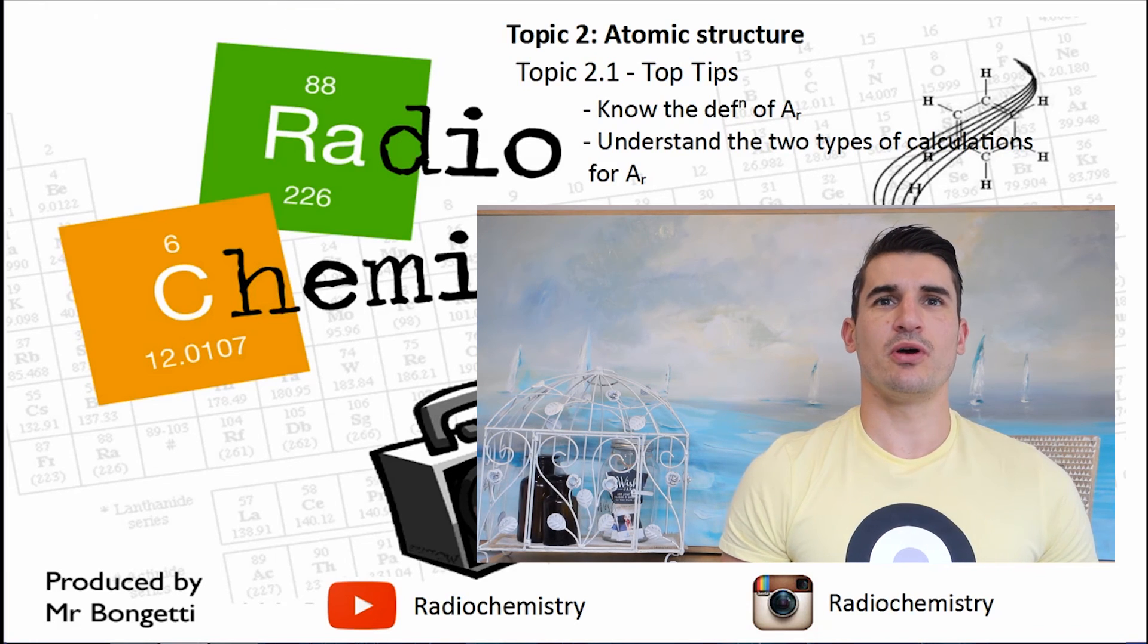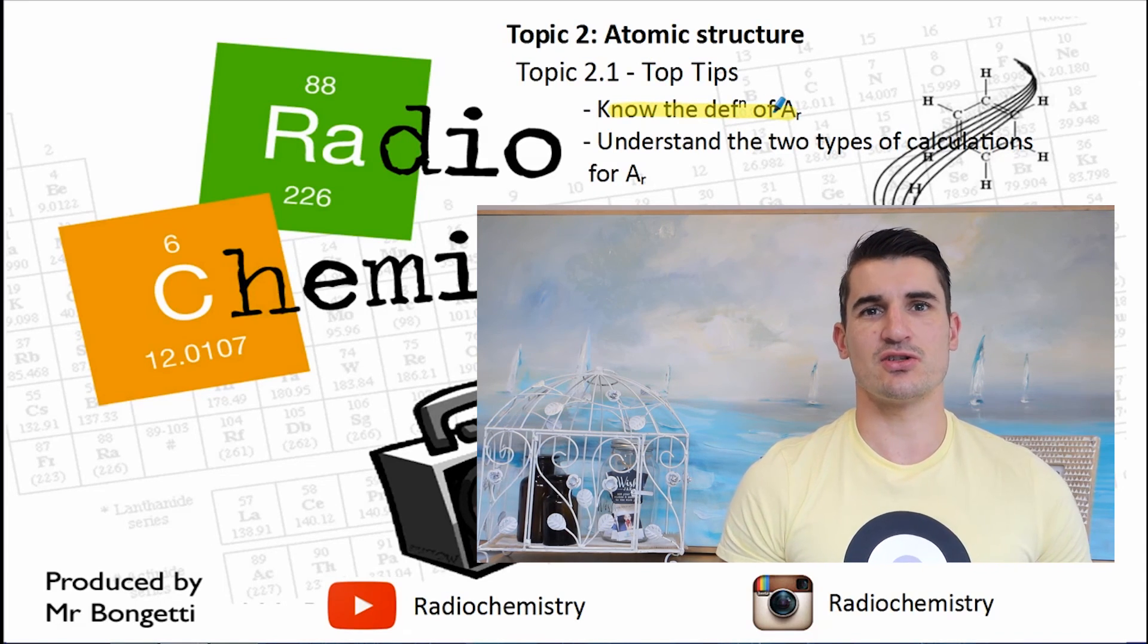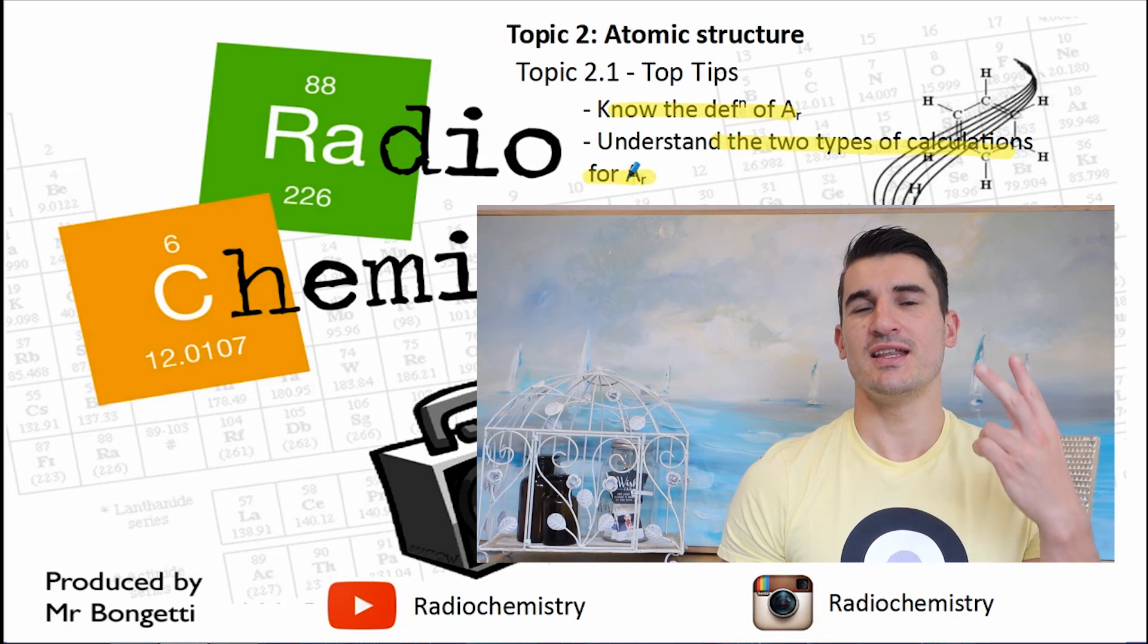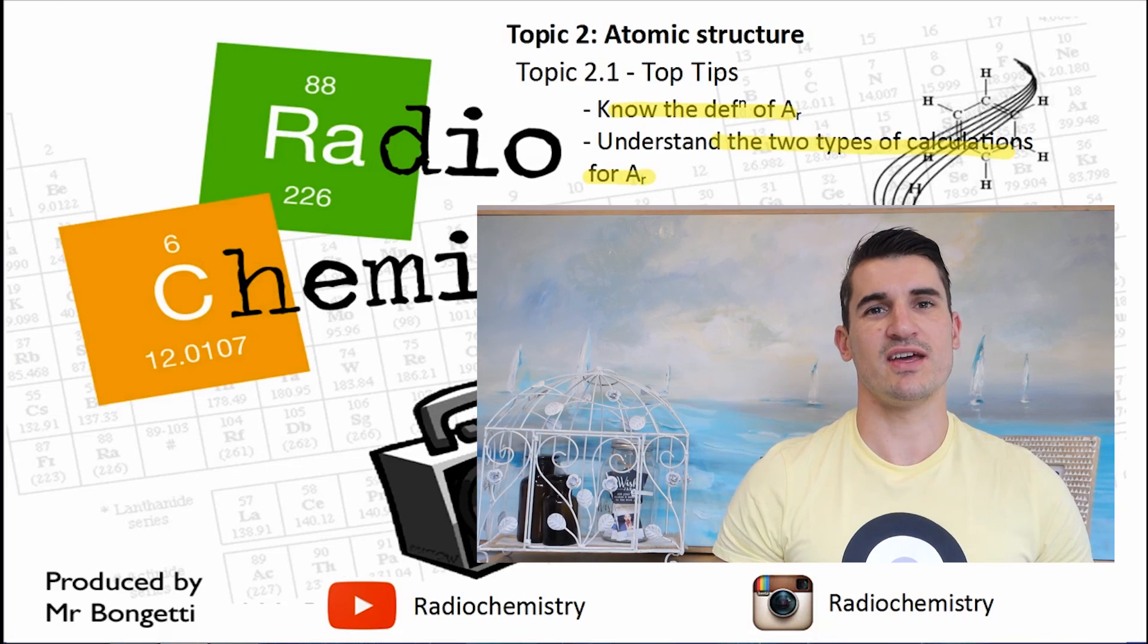Okay, topic 2.1, some top tips. Know the definition of the relative atomic mass and understand the two different types of calculations. One is subbing them in directly, the other is setting it up with the lighter isotope being X and the heavier element being 100 take away X.